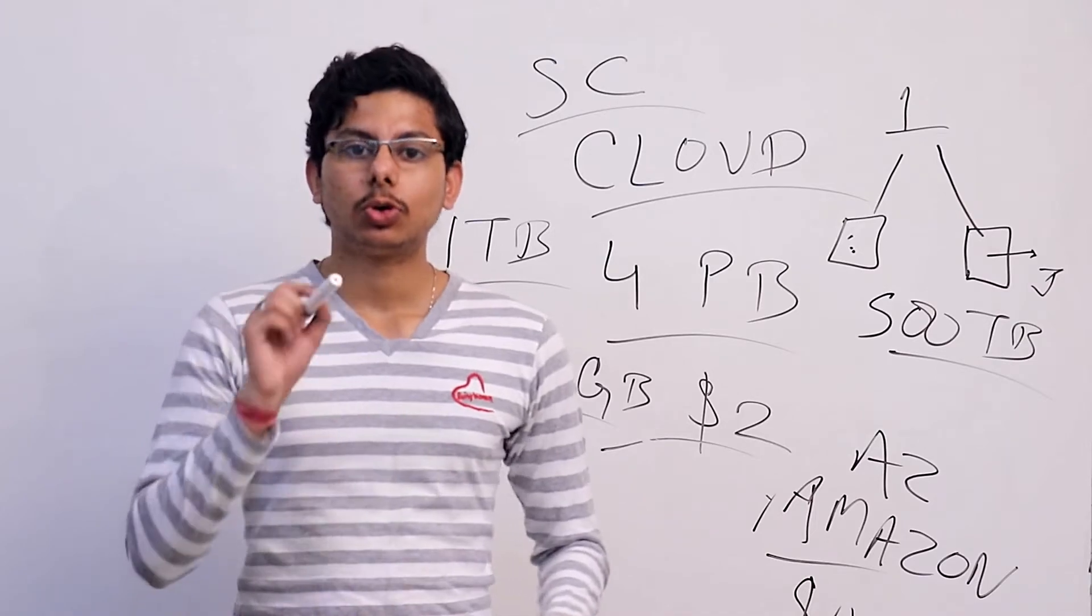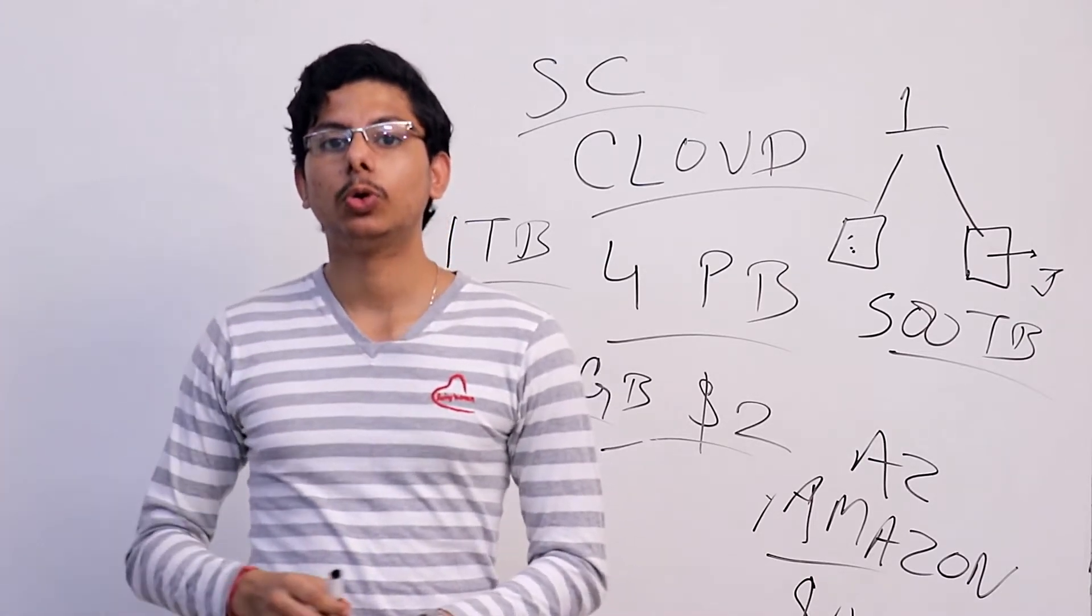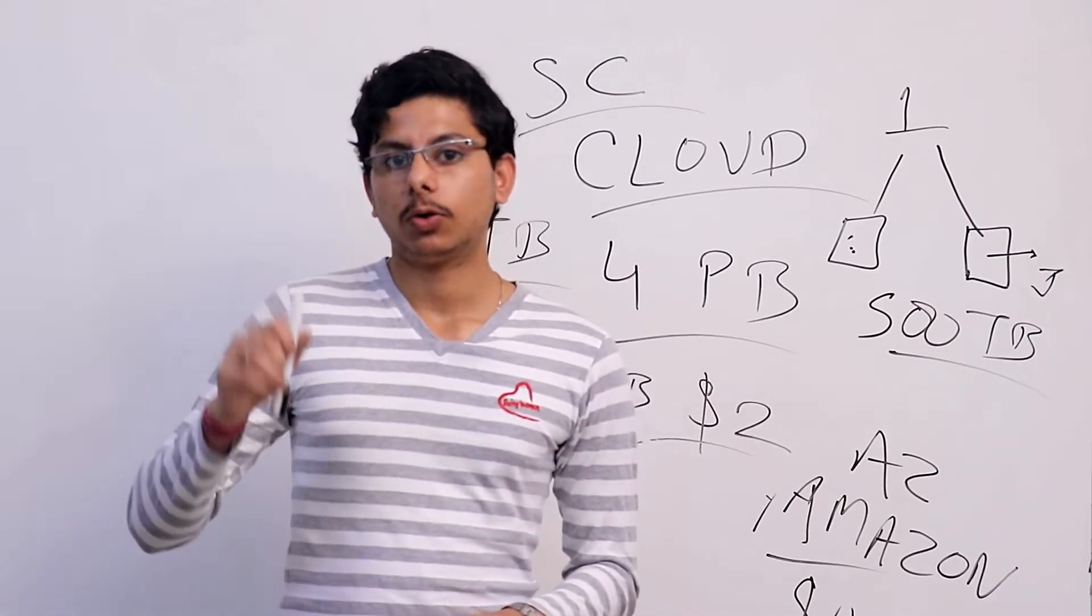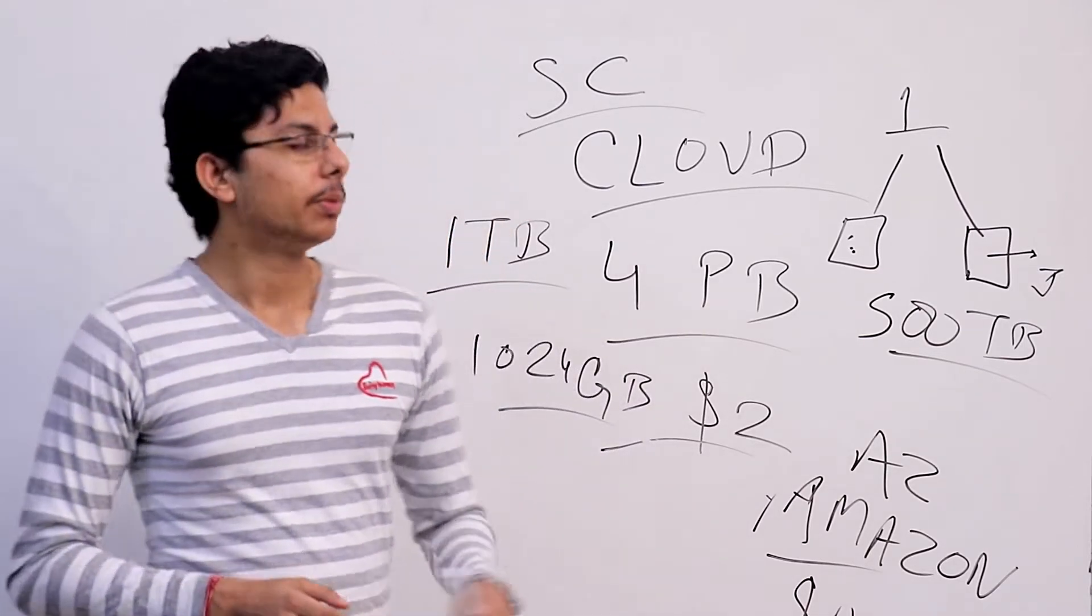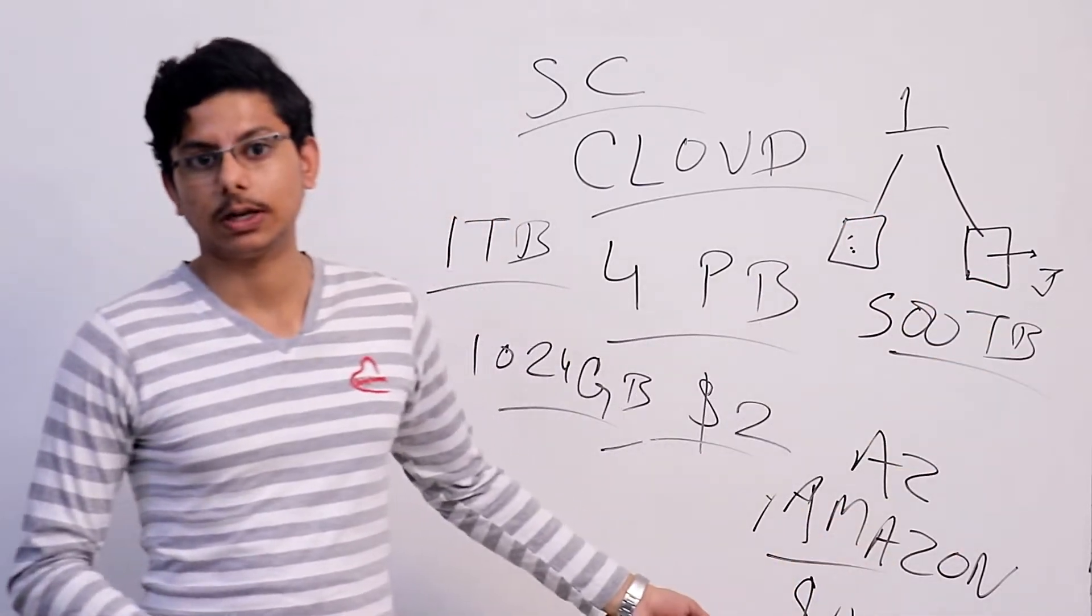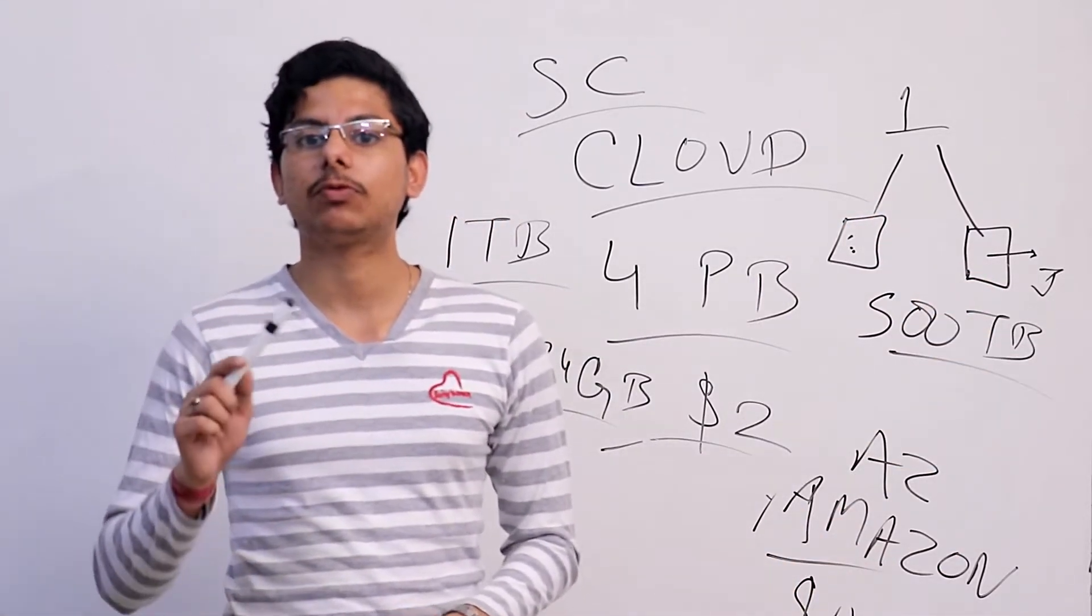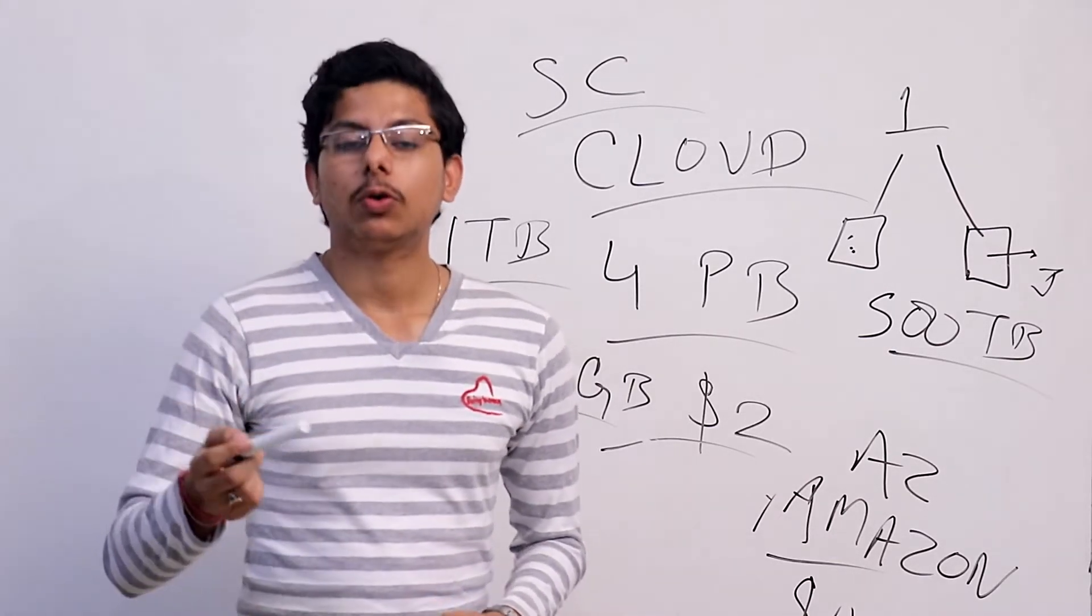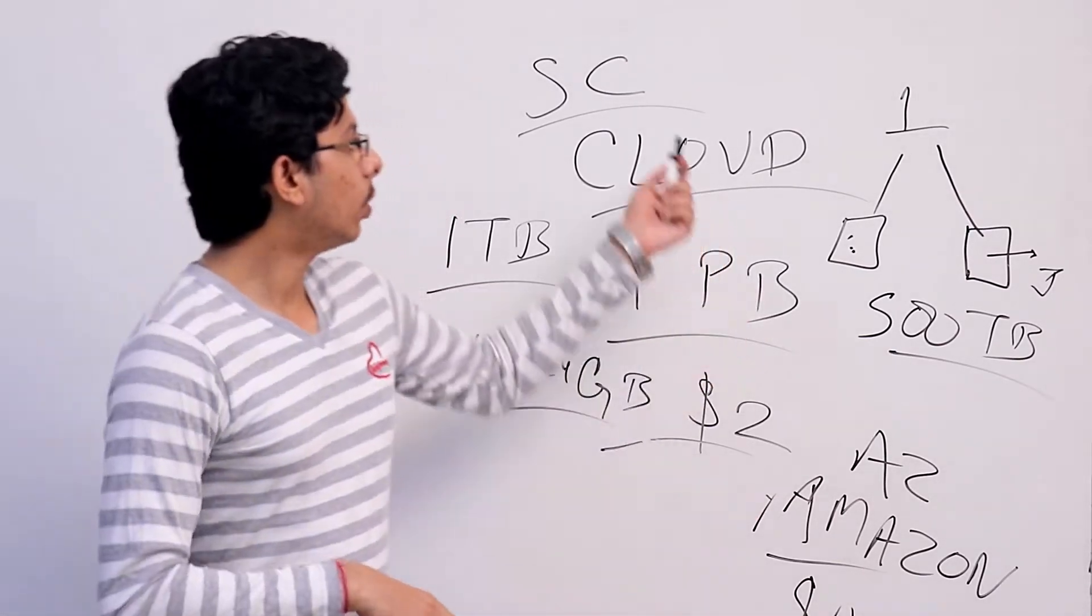But as it's decentralized, your data will be stored in different places, so no one will be able to completely get all your data from any place. One photo is placed there, one photo is placed there, one photo is placed there. Due to decentralization, the selling out of data is very less.